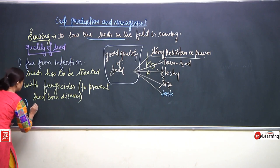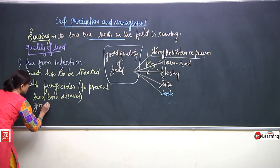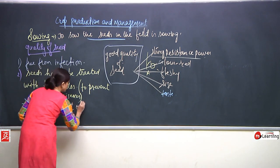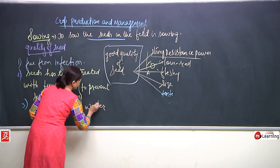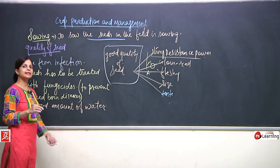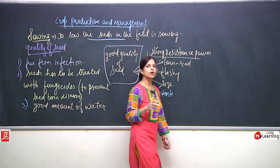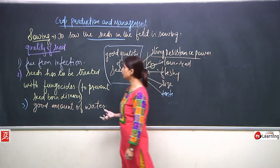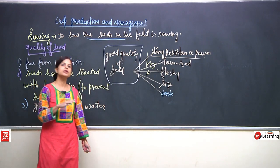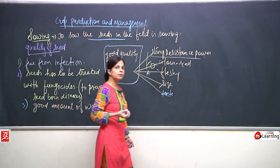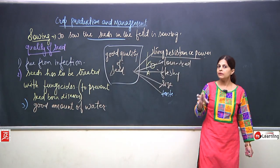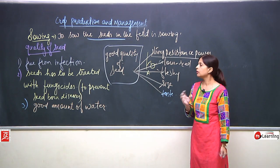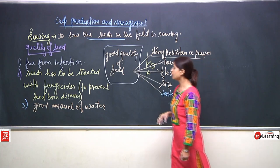Also, the seed should have a good amount of water. If the seed is totally dry, when we try to grow it, it will not have enough moisture and the growth process will stop — germination of the seed won't take place. So even the seed should have proper nutrition in it to provide to the seedling.